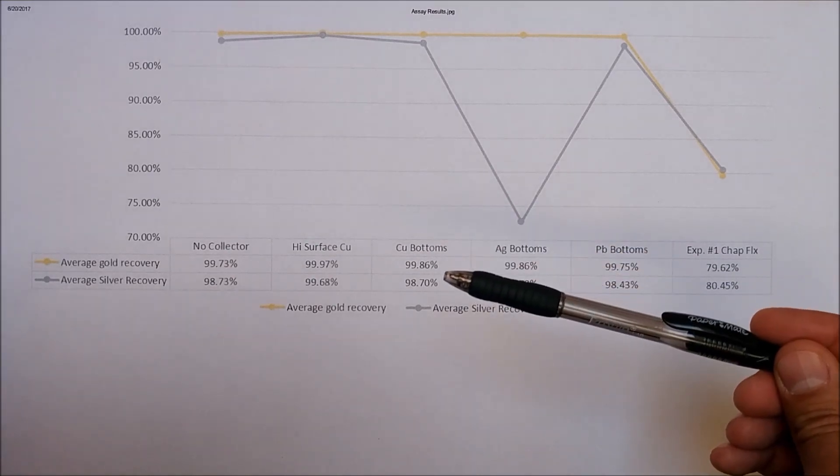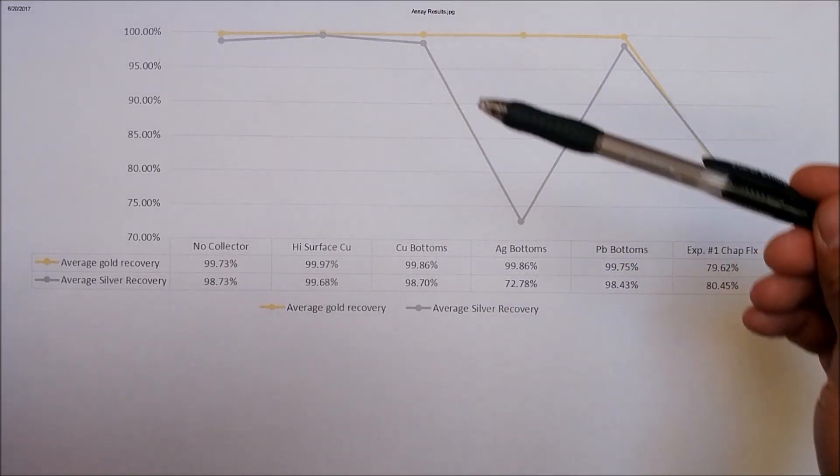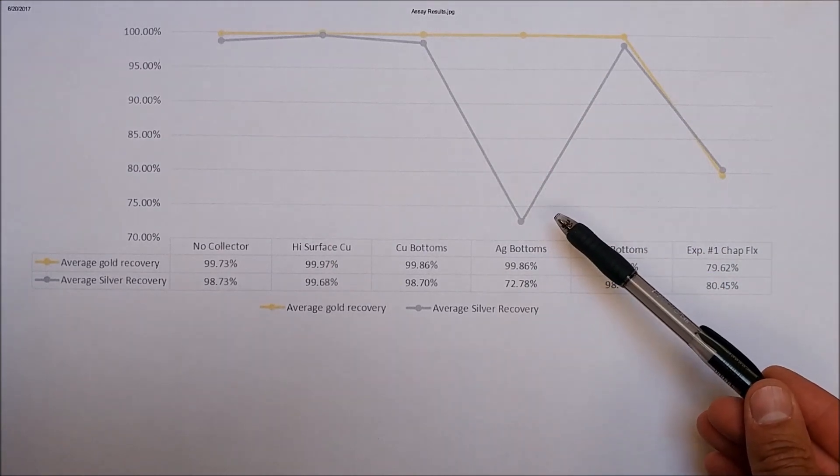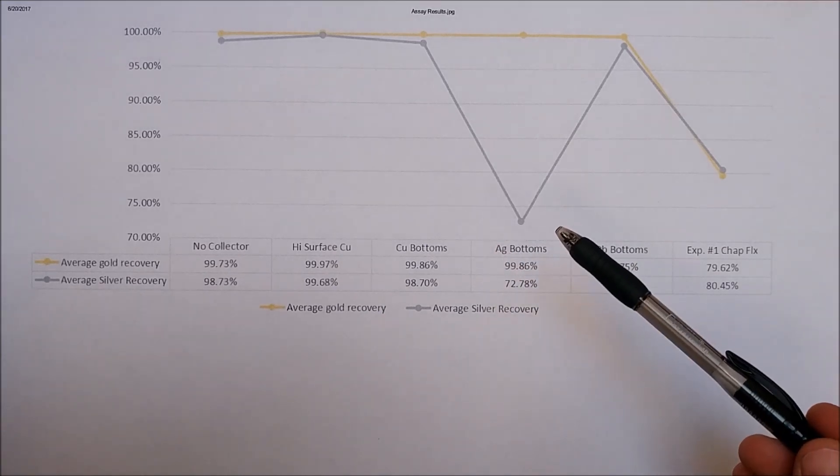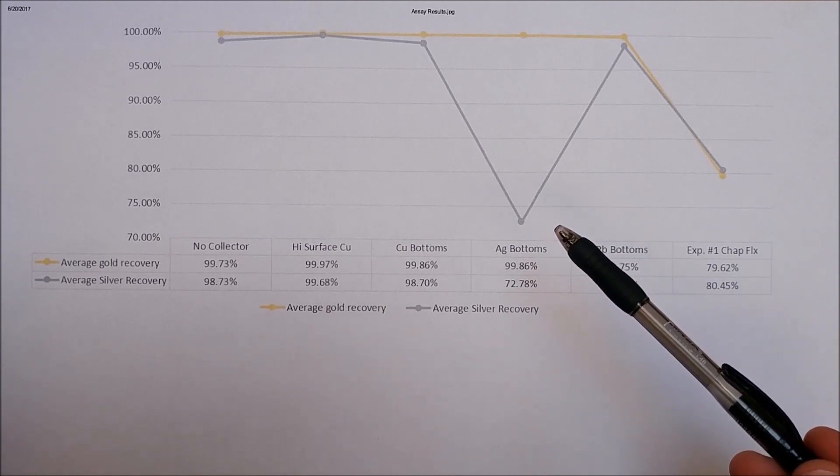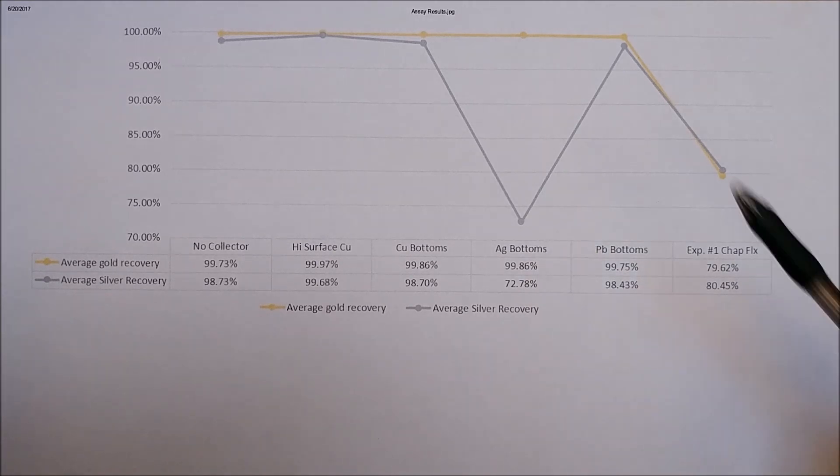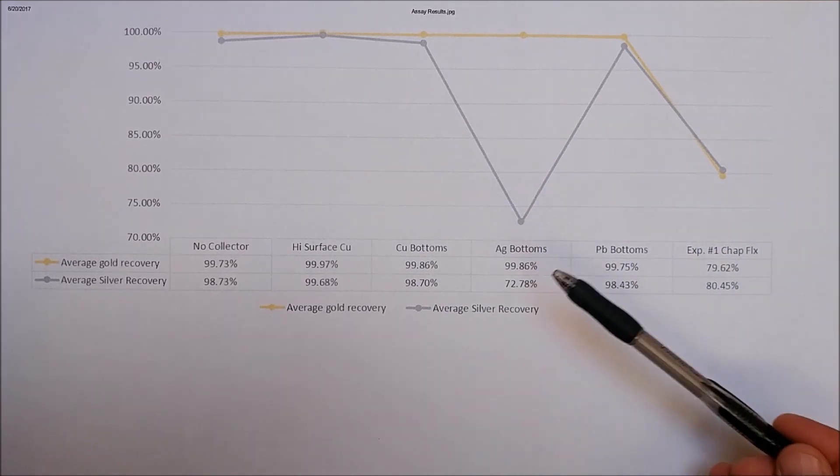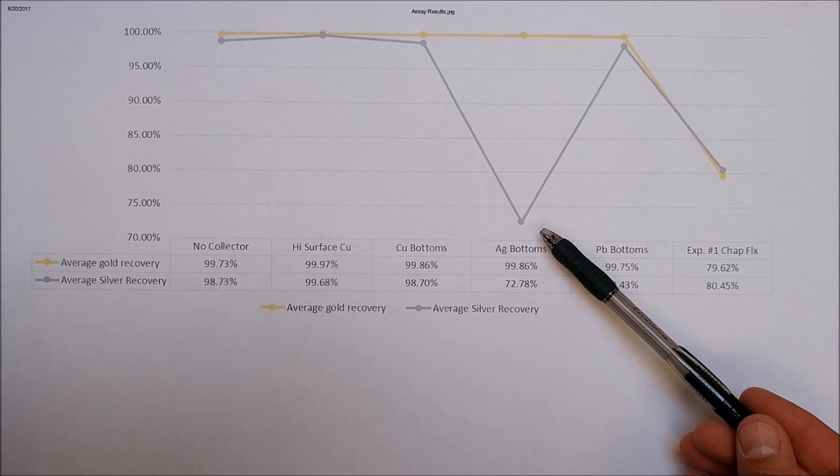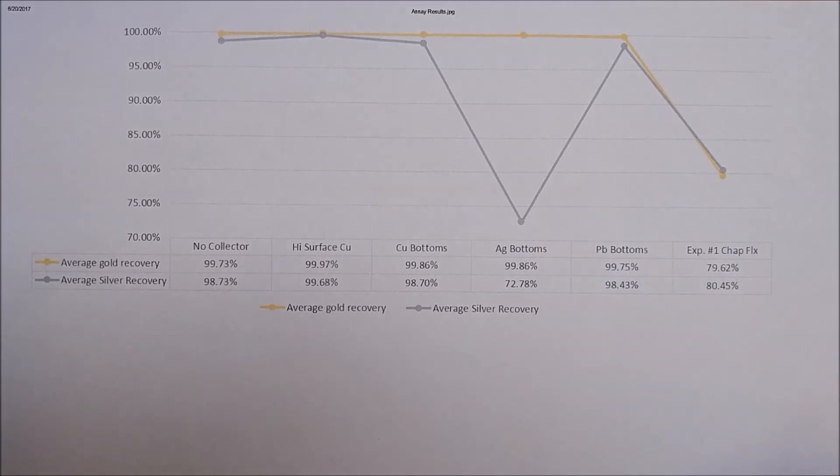The copper bottoms did about as equally well as the no collector. The silver recovery here is a little bit low, and I believe that's because we had such a high amount of silver metal at the bottom of the crucible that we lost a little bit to the slag, either through oxidation or a little bit got tied up with some sulfur and was carried into the slag. So even though it looks like our silver recovery is really low, there wasn't much silver in the initial material. And because we added so much silver, I think we lost just a little bit to the slag.